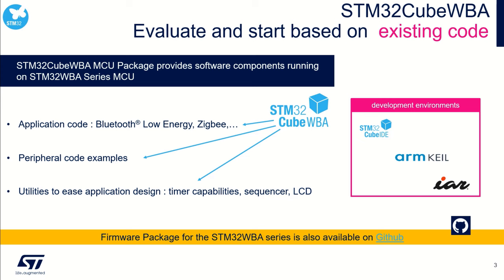Let's start with an overview of the STM32 Cube firmware package. At a high level, we have application code — advanced code examples that usually use Bluetooth Low Energy, Zigbee, or Thread, involving RF and potentially many peripherals. Then we have peripheral code examples dedicated to one specific peripheral. Inside this package we also have a set of utilities and middlewares to manage specific features: flash manager, timer capabilities, power manager, sequencer, LCD driver, and so on. All code examples are available for Keil, IAR, and STM32 CubeIDE development toolchain. The STM32 Cube WBA firmware package can be downloaded directly from st.com, from tools like CubeIDE or CubeMX, or it is also available on GitHub.